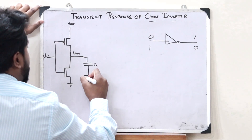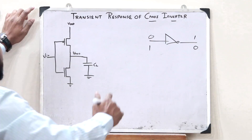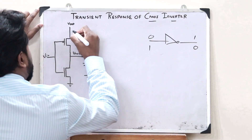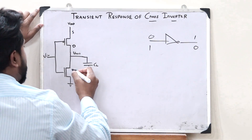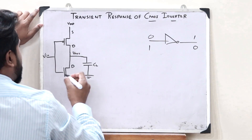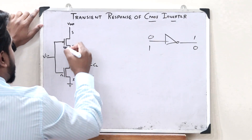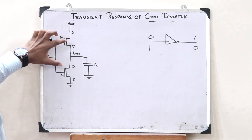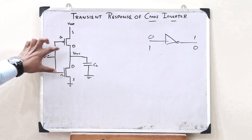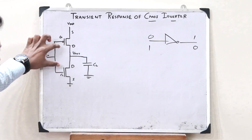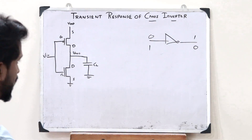We can obtain the output at this particular capacitor. For the PMOS transistor, this is the source and this is the drain. For the NMOS transistor, this is the drain and this is the source. This is the gate terminal for both of these transistors. This is the circuit of a CMOS inverter.